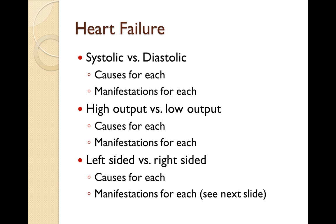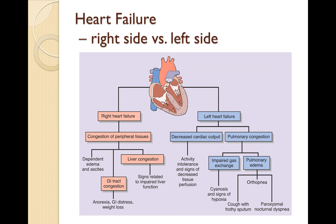Causes for left-sided heart failure include acute myocardial infarction, cardiomyopathies, and valve defects — mitral and aortic stenosis and regurgitation can all lead to left-sided heart failure. For manifestations: if the right side fails, you have congestion and blood backing up in peripheral tissues, backing up into the superior vena cava, showing up as jugular vein distension. It can also lead to edema, ascites, liver congestion, GI tract congestion, anorexia, GI distress, weight loss, nausea, and vomiting — all linked to right-sided heart failure.